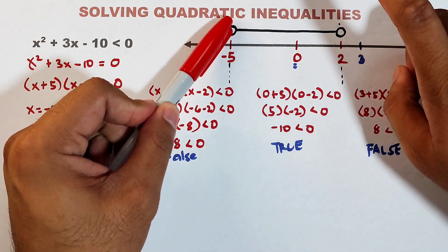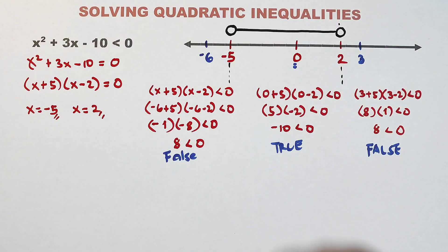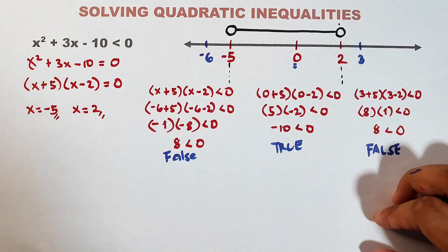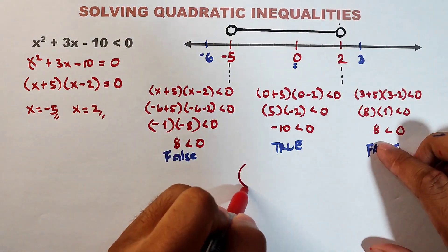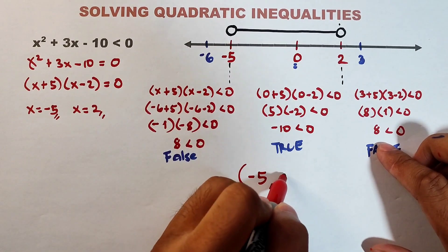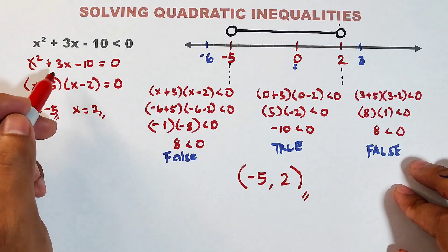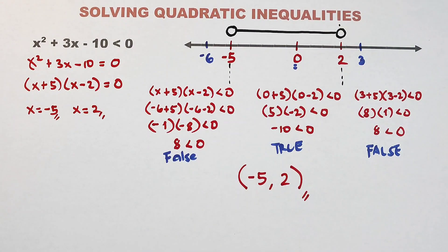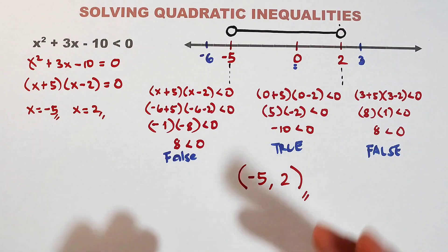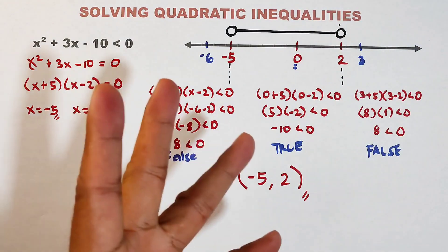The critical values -5 and +2 are not included in the solutions. In interval notation, since they are not included, we use parentheses: (-5, 2). This is the interval notation for the solution of x² + 3x - 10 < 0. I hope you learned something from this video on how to solve quadratic inequalities. If you're new to my channel, don't forget to like, subscribe, and hit the bell button. Thank you, bye!